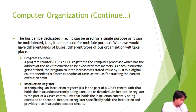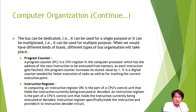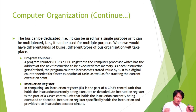The second component is the instruction register. The actual operations to be performed are not stored in the program counter but in the instruction register. In computing, the instruction register, or IR, is part of the CPU control unit that holds the instruction currently being executed or decoded. The instruction register specifically holds the instruction and provides it to the instruction decoder circuit.